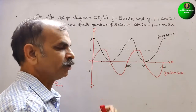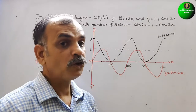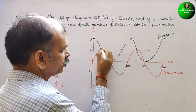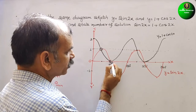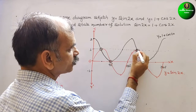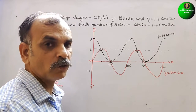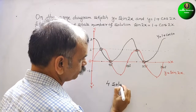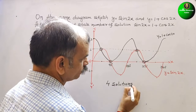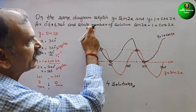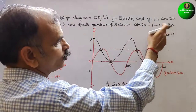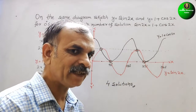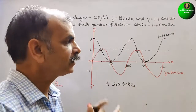Now we look at the solutions. Solutions are found where the two waves intersect. You can see there is a first solution, a second solution, a third solution, and a fourth solution. So we get four solutions in total — these are the points where y = sin2x equals y = 1 + cos2x on the graph.